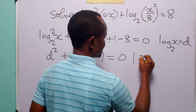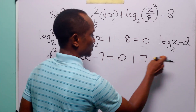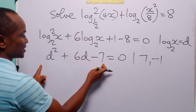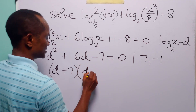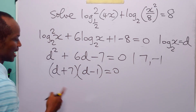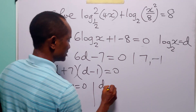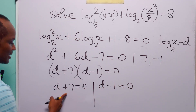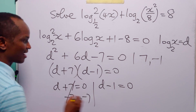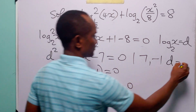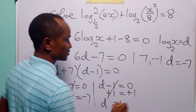These factors are going to be 7 and minus 1, because 7 times minus 1 gives us minus 7, while 7 minus 1 gives us 6. So we can factorize the left-hand side as (d plus 7) multiplied by (d minus 1) equals 0. From here, either d plus 7 equals 0 or d minus 1 equals 0. When we subtract 7 from both sides, d equals minus 7. And when we add 1 to both sides, d equals 1.